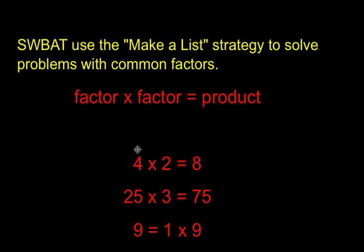Here's some examples here. 4 times 2 equals 8, so 4 and 2 are factors of 8. 25 times 3 equals 75, so 25 and 3 are 2 of the factors of 75. And 1 times 9 equals 9, so 1 and 9 are 2 of the factors of the number 9.